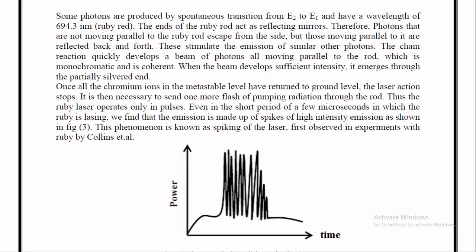Some photons are produced by spontaneous transition from E2 to E1 with a wavelength of 694.3 nanometers. The ends of the ruby rod act as reflecting mirrors. Photons not moving parallel to the ruby rod escape from the side, but those moving parallel to it are reflected back and forth. These stimulate the emission of similar photons. The chain reaction develops a beam of photons all moving parallel to the rod which is monochromatic and coherent.